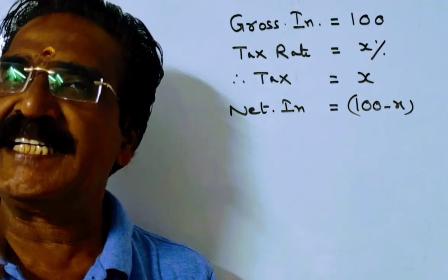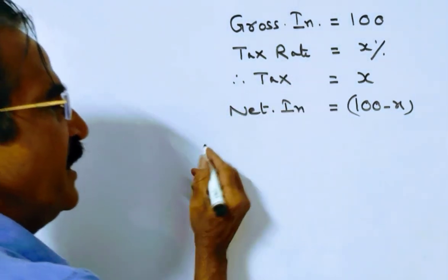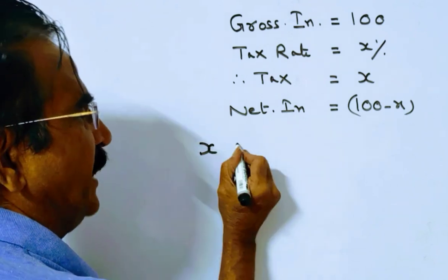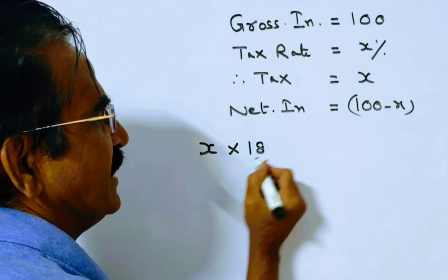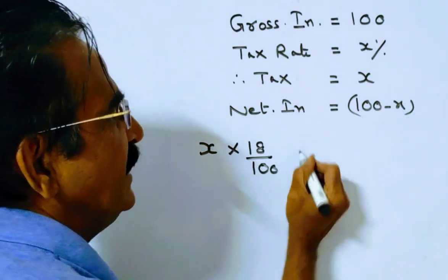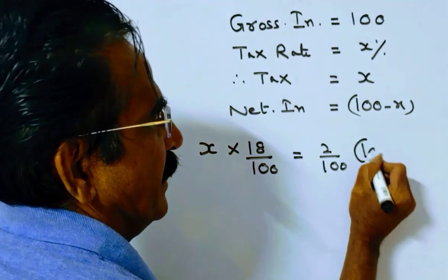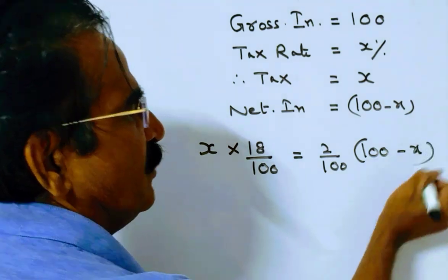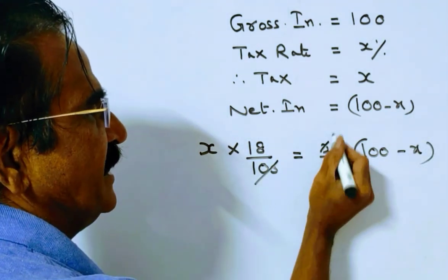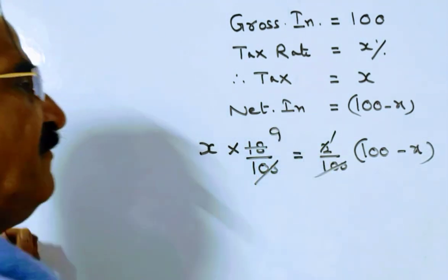So increase in income tax, which is 18 percent, is equal to the decrease in net income, which is 2 percent. 18 percent of x equals 2 percent of 100 minus x. The 100s get cancelled and we get 9x equals 100 minus x.